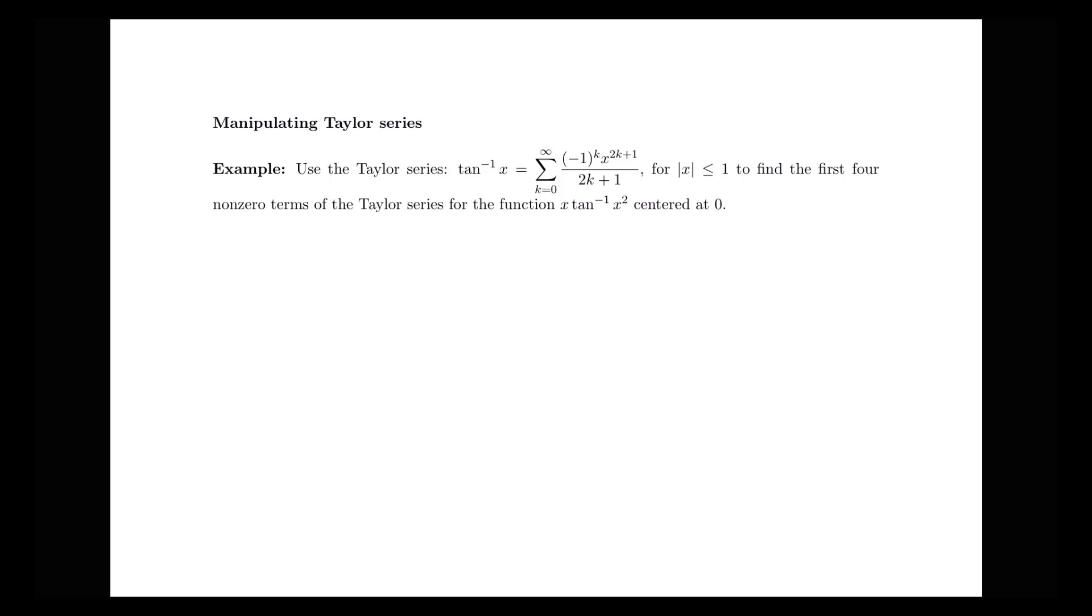x to the 2k plus 1 over 2k plus 1 for the absolute value of x less than or equal to 1. And I want to use that Taylor series to find the Taylor series for the function x times inverse tangent of x squared.